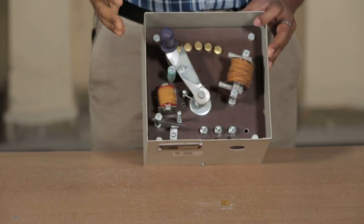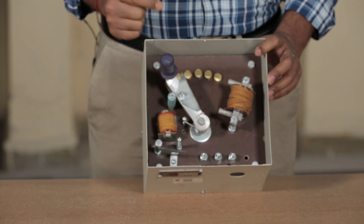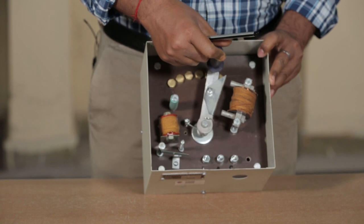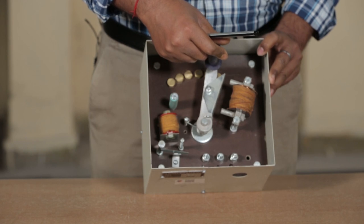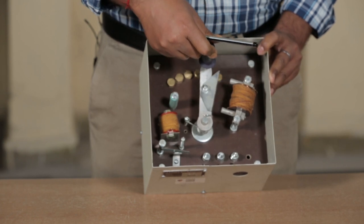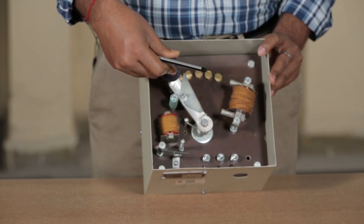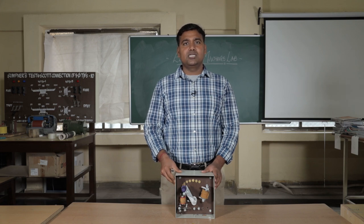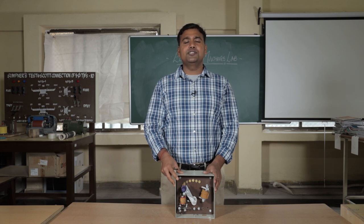This is a 3-point starter, which is used to restrict the initial amount of current by slowly revolving the handle so that resistance is added slowly. On completing the experiment, the handle will automatically come to the minimum point when we turn off the supply. 3-point starters are used for shunt motors and 2-point starters are used for series motors.